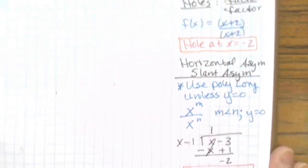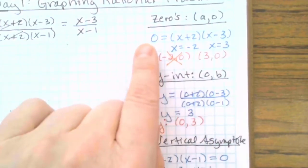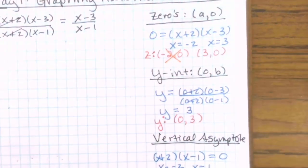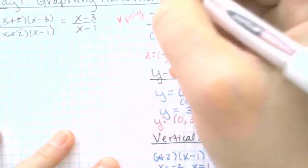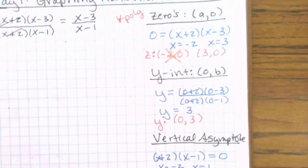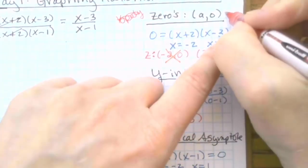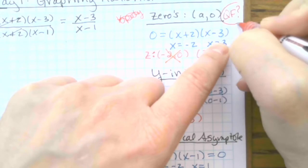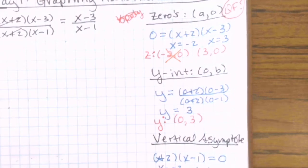Going back up to zeros — if your zeros aren't nicely factored, you might have to use the quadratic formula. Sometimes you're going to get decimal answers for your zeros instead of nice whole numbers, and this will happen more often in this unit than in previous units.